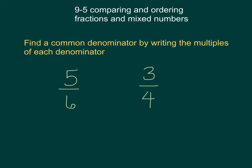When you're trying to compare or order fractions, you have to have a common denominator. So when we say common denominator, we mean the denominator, so the number on the bottom of both fractions has to be the same.